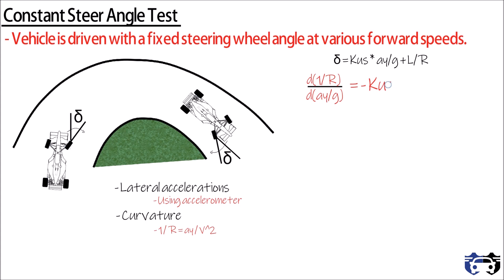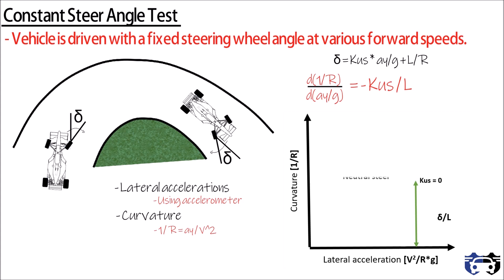Differentiating the equation with respect to lateral acceleration, the slope of the curve equals minus kus divided by L. On plotting the curve between curvature and lateral acceleration: when kus equals 0, the car is in neutral steer with a slope of 0. When kus is not equal to 0, at the maximum point moving towards the left the slope is negative and kus is greater than 0, giving understeer. Moving towards the right, the slope is positive, kus is less than 0, and the car will oversteer. This is the simplest test as it requires only lateral acceleration and forward speed for the calculation.